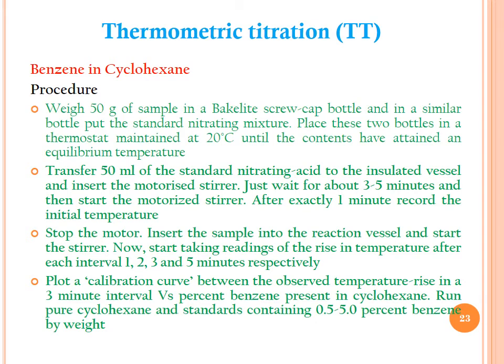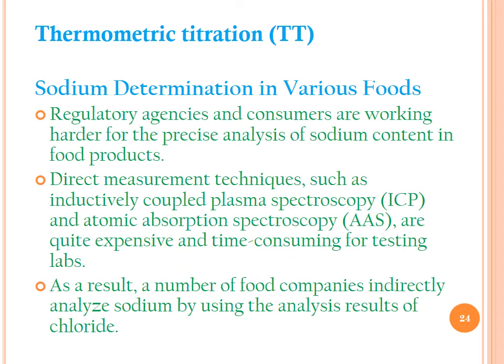Procedure for determination of benzene in cyclohexane: weigh exactly 50 g of sample in a Bakelite screw-cap bottle, and in a similar bottle place the standard nitrating mixture. Place both bottles in a thermostat maintained at 20°C until contents attain equilibrium temperature. Transfer 50 mL of standard nitrating acid to the insulated vessel and insert the motorized stirrer; wait 3–5 minutes. Start the stirrer, and after exactly one minute record the initial temperature. Stop the motor, insert the sample into the reaction vessel and start stirring. Record the temperature rise at 1, 2, 3, and 5 minutes respectively. Plot a calibration curve of observed temperature rise at the 3-minute interval versus percentage benzene in cyclohexane, running pure cyclohexane and standards containing 0.5–5% benzene by weight.